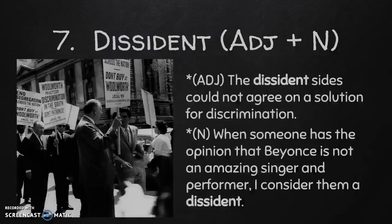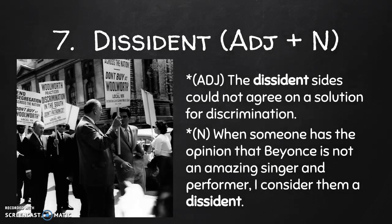Number seven is dissident, which can be an adjective and a noun. For the adjective definition, dissident describes something that is differing or disagreeing in opinion or attitude. An example adjective sentence would be: the dissident sides could not agree on a solution for discrimination — so those sides are disagreeing.